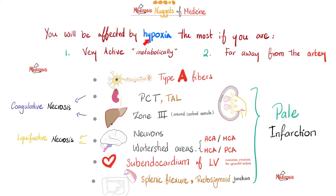So what are the tissues that are the most vulnerable to hypoxia? Here are the rules: if you are very active metabolically speaking, you will be very vulnerable should the tissue lack oxygen. Moreover, if you are far away from the artery anatomically speaking, you will be more vulnerable to hypoxia, because the artery is the one that brings you oxygen.